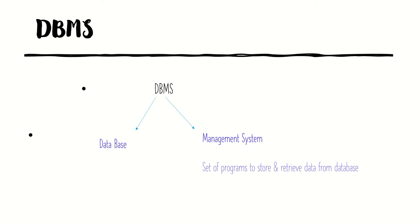Now we come to what is a database management system. So far we have explained what is data and what is a database. DBMS is divided into two parts: the first part is 'database' and the second part is 'management system.' A database, as we explained, is a collection of interrelated data. A management system is any system used to manage something — here it is a set of programs which are used to store and retrieve data from a database.